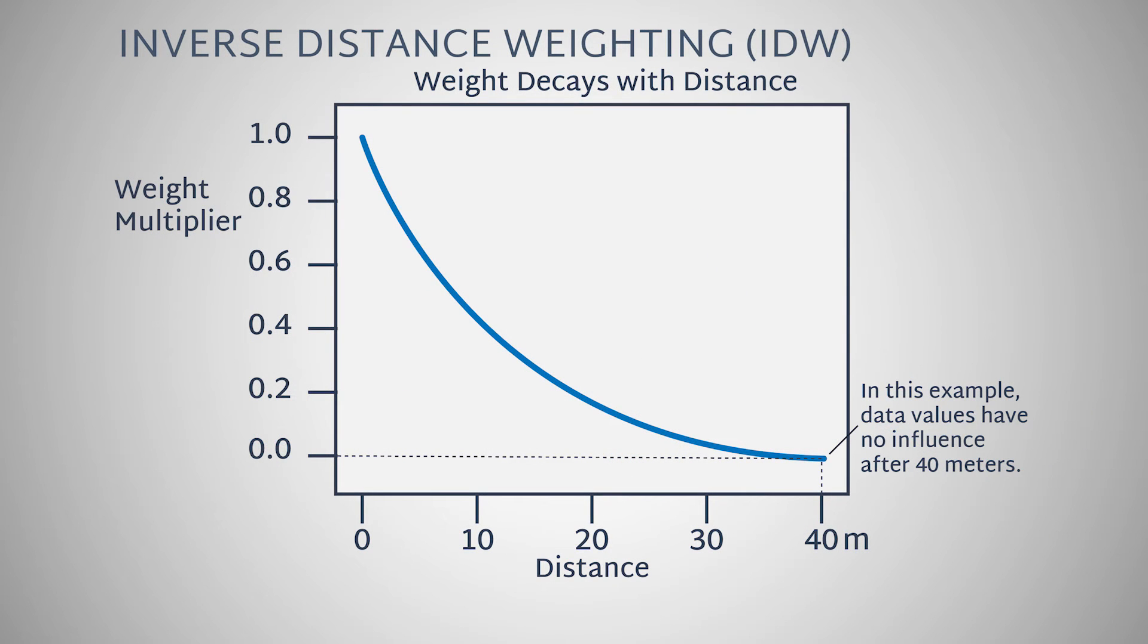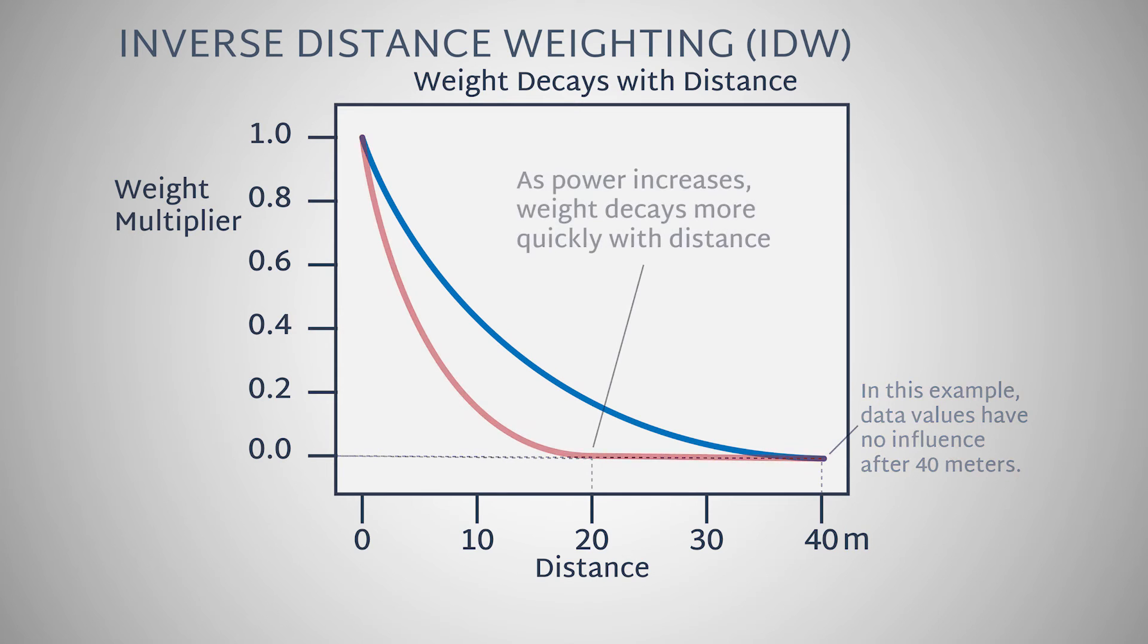Using a higher power value will increase the rate of decay. The result will mean that local data points will have a stronger influence. This will increase variation locally and result in a rougher surface overall.